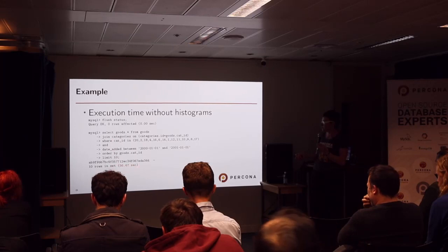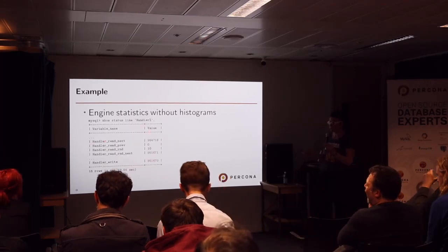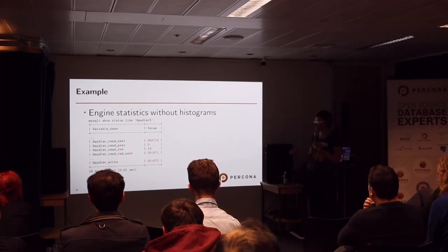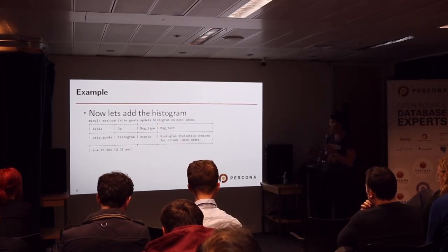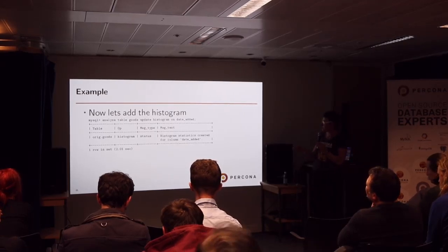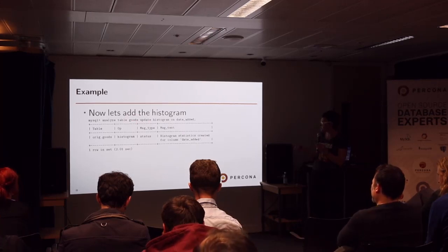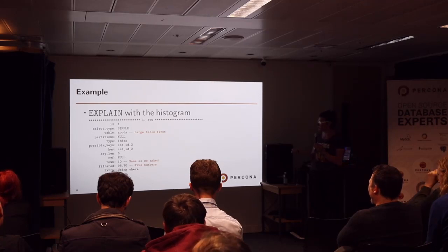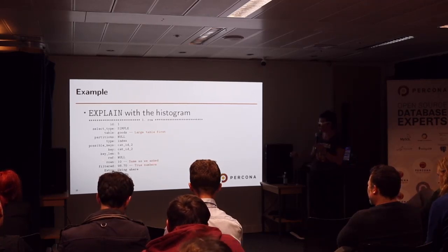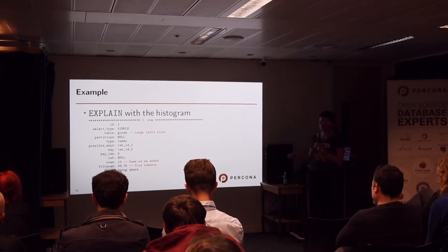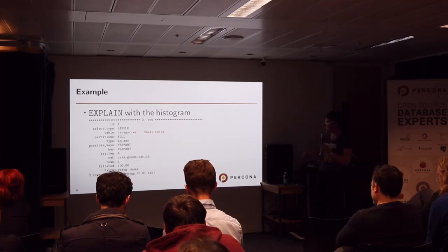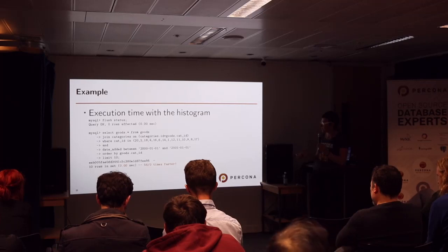Running this query takes 50 seconds. Here are the optimizer engine statistics — status variables that increment each time the storage engine performs an operation. We're interested in reads. It also writes because it creates a temporary table to resolve this query. Now, this is the histogram syntax: ANALYZE TABLE, UPDATE HISTOGRAM ON column. After applying the histogram, the EXPLAIN is different — the large table comes first with the same number of rows we asked for, and the 'filtered' value now shows true numbers: we're asking for 100 rows and taking 98. Then we select a single row from the small table. The result is 56 times faster — or maybe divide by zero.